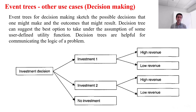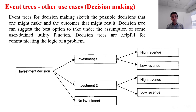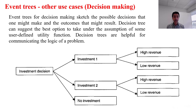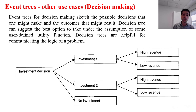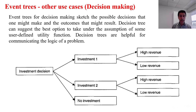Another use case is decision making. Sometimes event trees for this purpose are called decision trees. In this example, we are looking at an investment decision with three alternatives: Investment 1, Investment 2, or no investment at all. For each scenario, Investment 1, for example, can have high revenue or low revenue, and the same applies to Investment 2. This structure forms the basis for decision making, which is why the term decision tree is used.